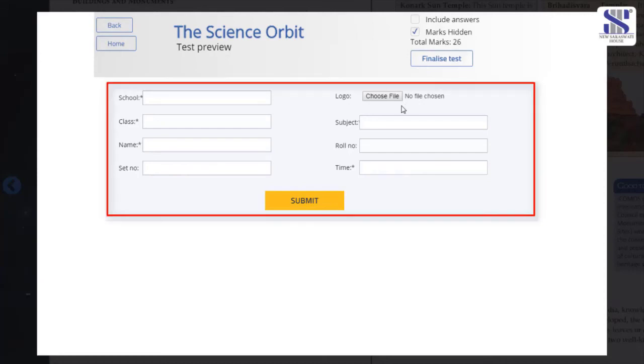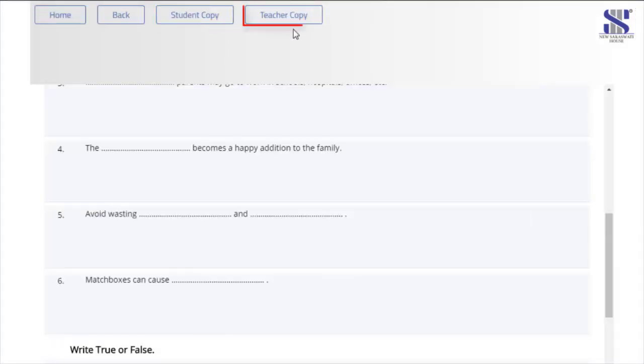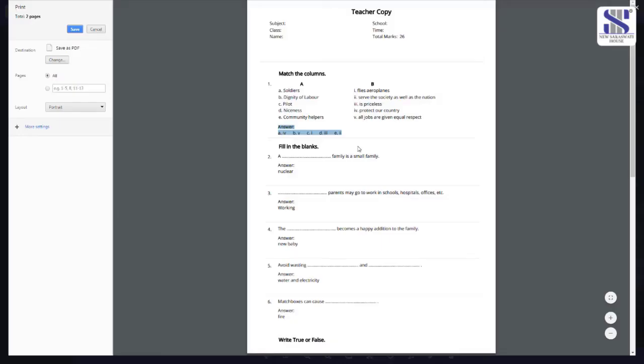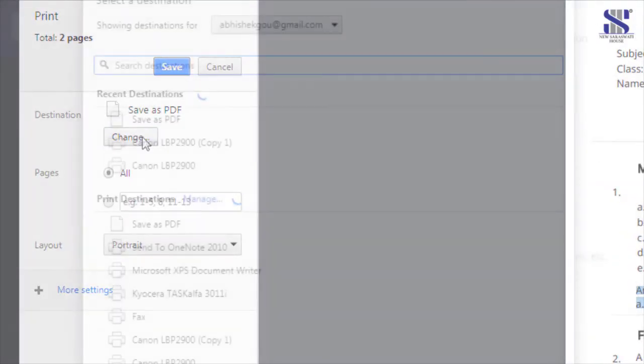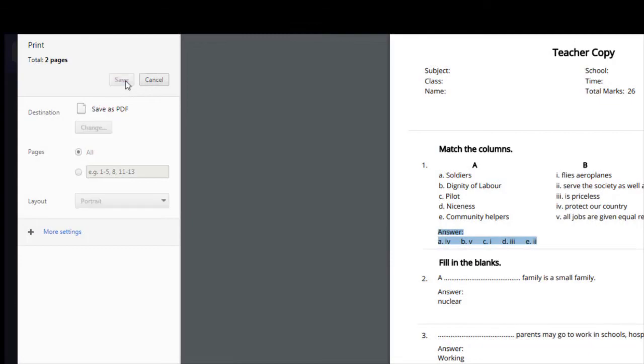You need to fill up the name of your school, class and other details. You can also upload the logo of your school. Click submit. Save a student's or a teacher's copy. You can easily save it in a PDF format. If needed, you can convert this PDF to Word file for your use.